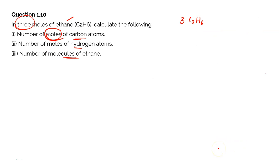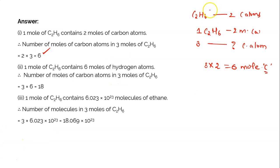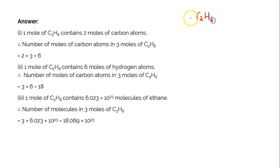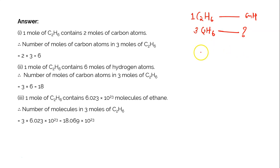The second part asks how many moles of hydrogen atoms are present. Using the same approach: one C2H6 has six hydrogen atoms, so one mole of C2H6 has six moles of hydrogen atoms. For 3 moles of C2H6, cross multiply: 3 into 6 divided by 1 equals 18 moles of hydrogen atoms.